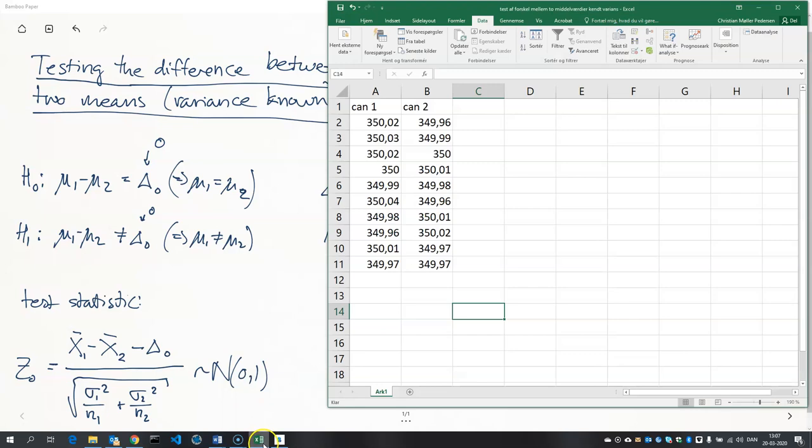So here we have the 10 weighings of can one and can two, and the first thing I need to do is to compute the sample mean of the first sample here, x1, and that's equal to—that would be the average. I think the command is called that in English. In Danish it's middelværdi.